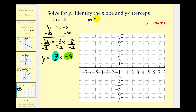So m is equal to three-halves and b is equal to negative four. The y-intercept is the point zero, negative four, which would be here on the y-axis. Then with a slope of three-halves, we'll go up three units and right two units, then up three units and right two units again, and our line passes through these points.